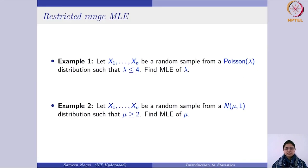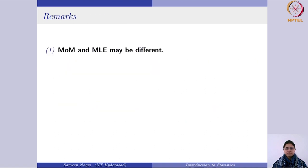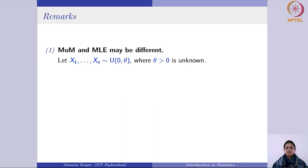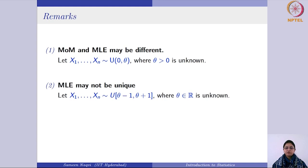A few important remarks about MLE: First, the two estimation methods — method of moments and MLE — can give different answers. For example, with a random sample from Uniform(0, theta), method of moments gives twice the sample mean, while MLE gives the largest order statistic x_(n). Second, MLE may not be unique. For a random sample from Uniform(theta-1, theta+1), MLE may yield a range of values rather than a single estimator.